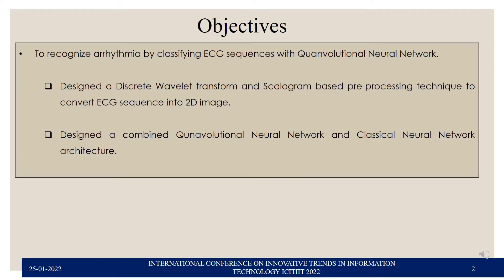The prominent objective of this research work is to recognize arrhythmia by classifying one-dimensional ECG sequences with the help of a Convolutional Neural Network. We intend to design a discrete wavelet transform and scalogram-based preprocessing technique to convert the one-dimensional ECG sequence into a two-dimensional image. The second objective is to design a combined quantum and classical Convolutional Neural Network architecture — basically a hybrid quantum CNN.